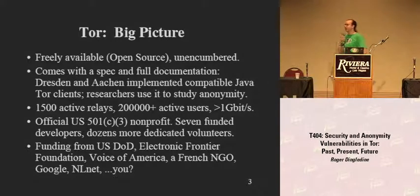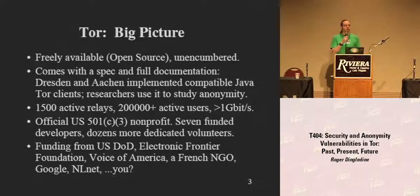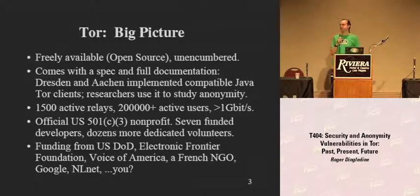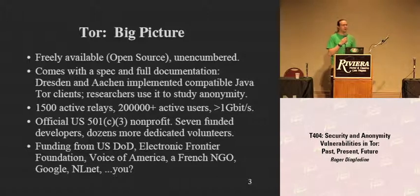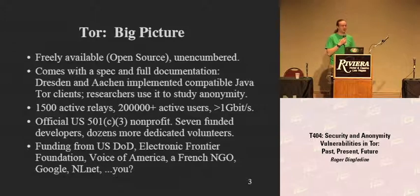We've got about 1,500 relays all around the world, and probably somewhere between 100,000 and 500,000 Tor clients running right now. As of the end of 2006, we're an official 501(c)(3) US nonprofit. There are seven people being paid to work on Tor right now, which is pretty cool because in April we had three.